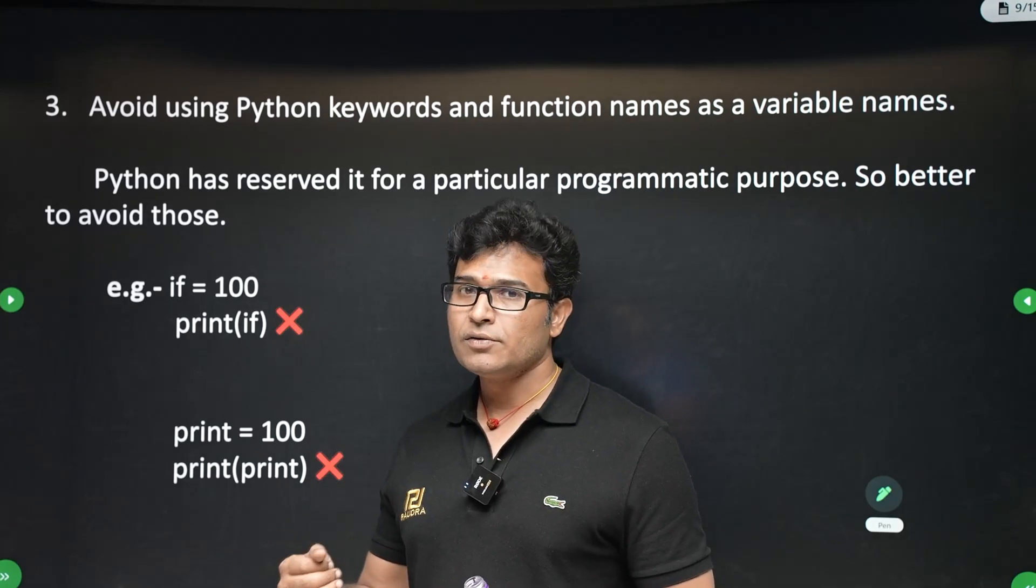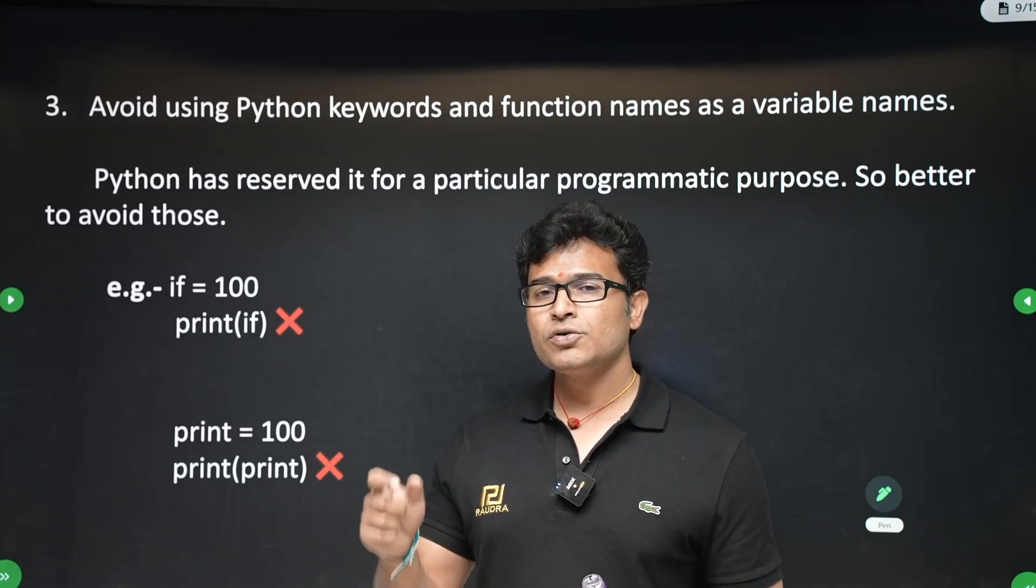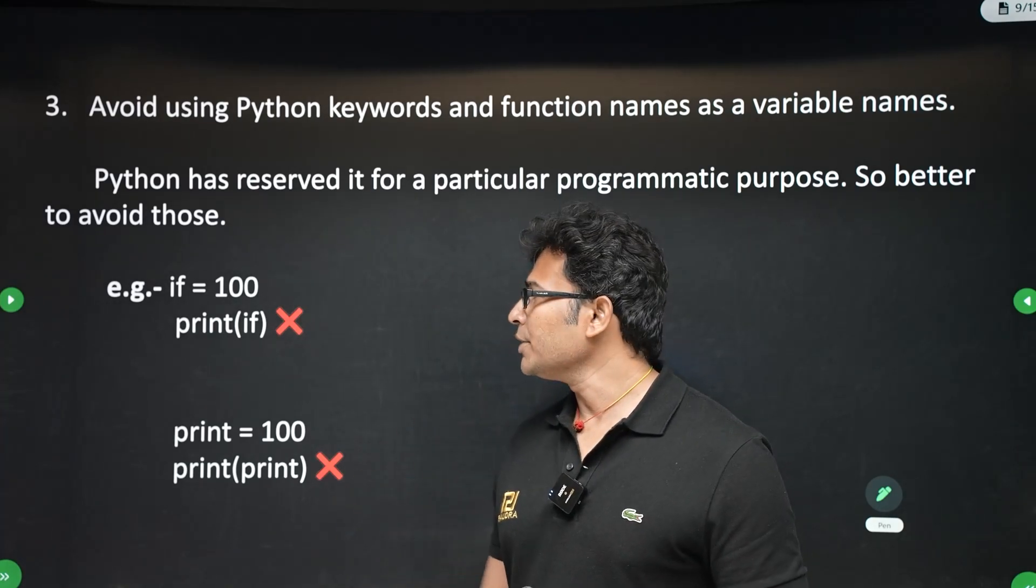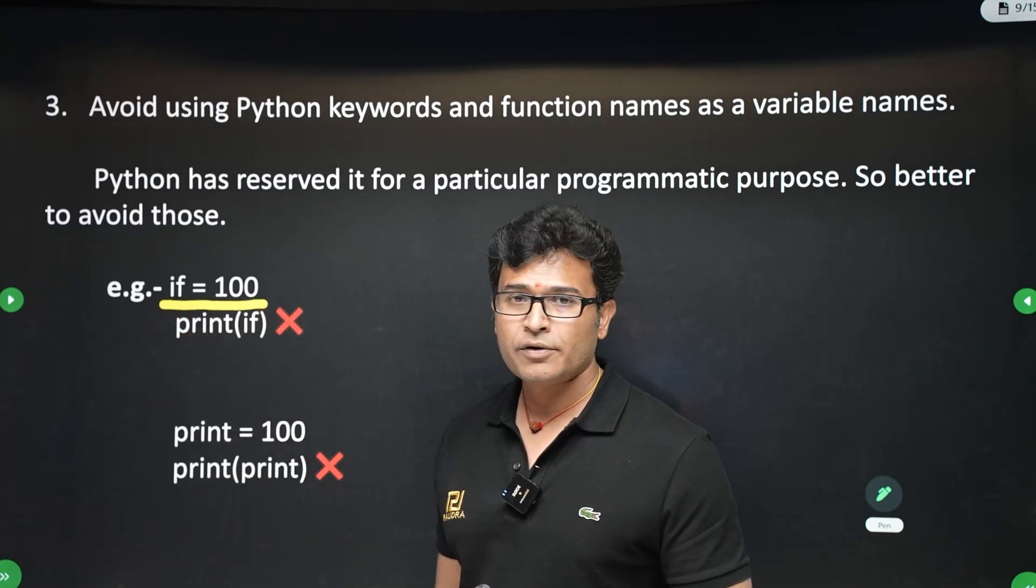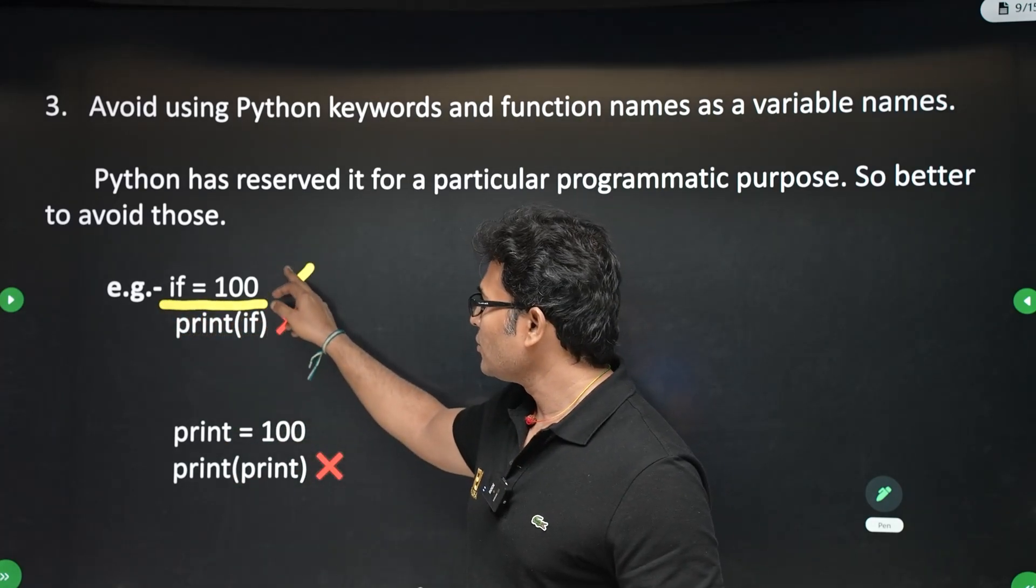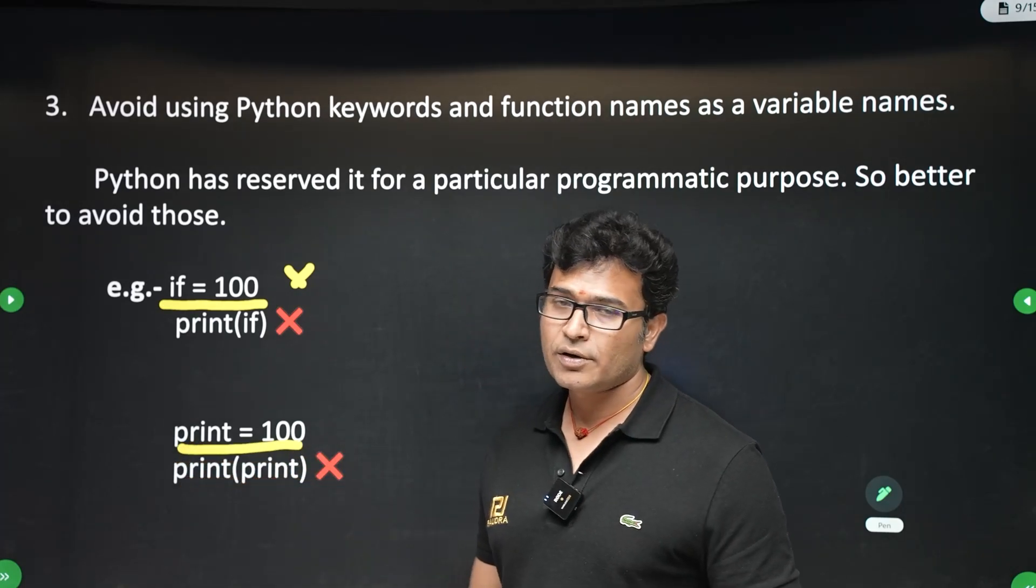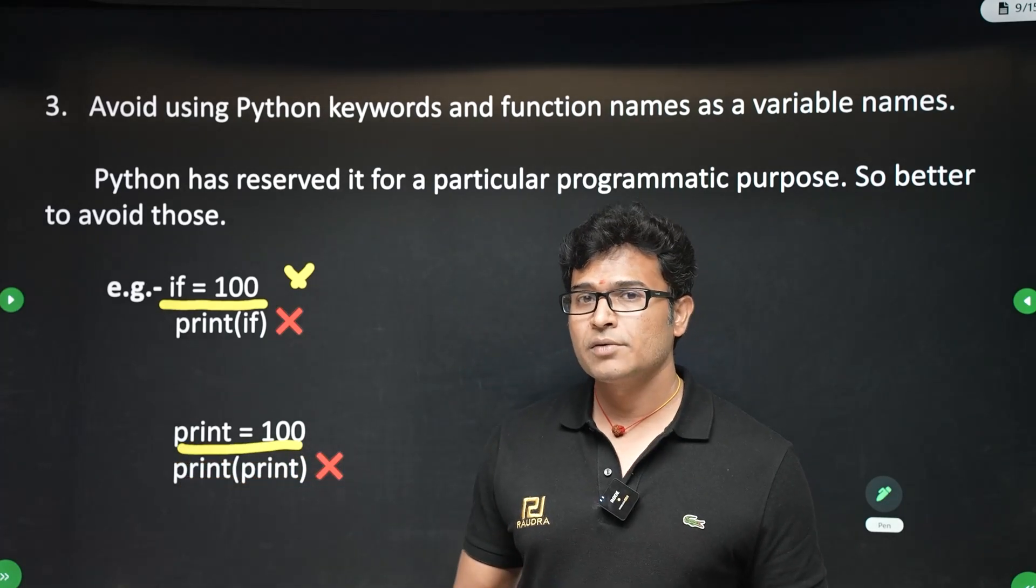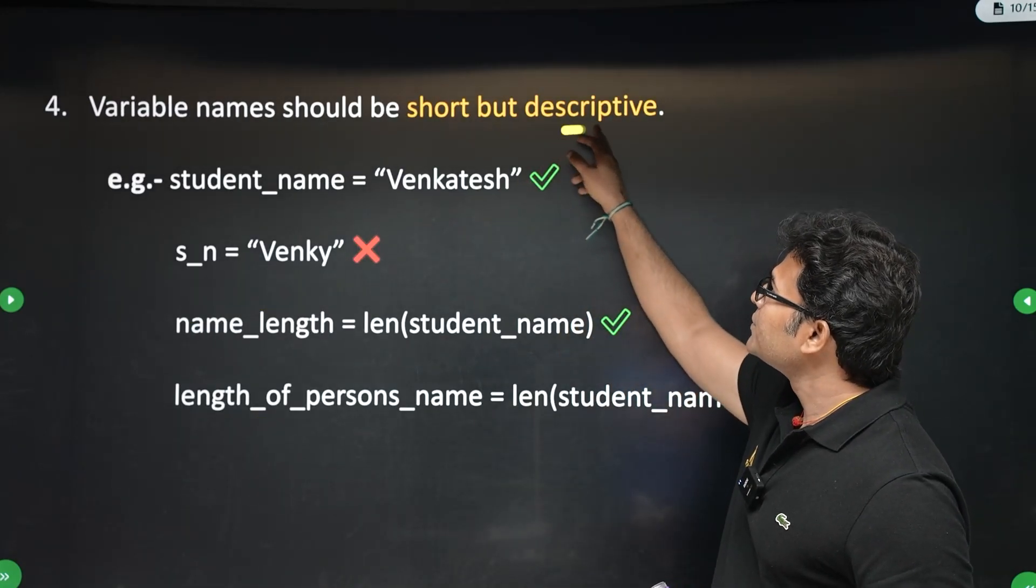Python has some set of keywords which are reserved, like if, else, all these keywords which are reserved: while, for, all are reserved. You should not use those keywords as a variable name. For example, you cannot write like this: if equal to 100. You cannot write like this, this is not allowed. Print equal to 100. Print is an inbuilt function. You cannot use that as a variable name.